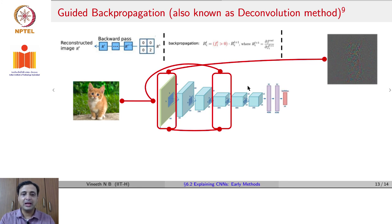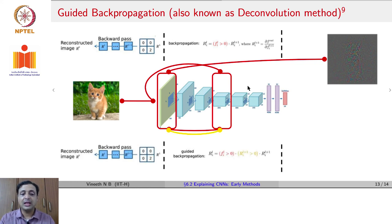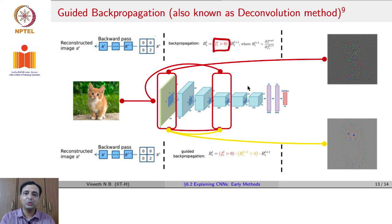To handle this scenario, guided backpropagation, which is a method proposed in 2015, proposed that instead of using in the backward pass, instead of allowing all the gradients to pass through, let us not allow the negative gradients to pass through. What does it mean? We are saying here, originally, we said when the input is greater than 0, only those gradients will pass through because the rest of the gradients would have been cut off by the ReLU, which was applied in the forward pass. But now, we are now adding that the gradient must also be non-negative when you propagate.